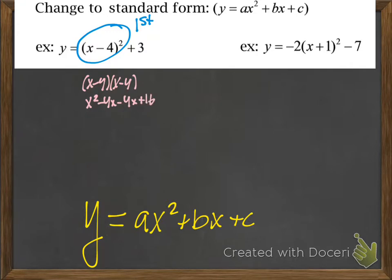Don't forget that we're also adding 3 to that. Then we're going to combine like terms, which simplifies to x squared minus 8x plus 19. For the second one,